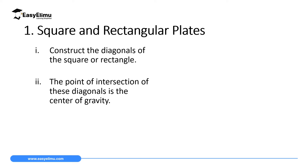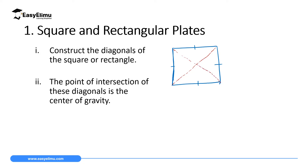To determine the center of gravity of a square or rectangular plate, you construct the diagonals. For a square, remember all four sides are equal. You construct one diagonal running across and then another diagonal. Where these two diagonals meet in the middle, that will be the center of gravity.